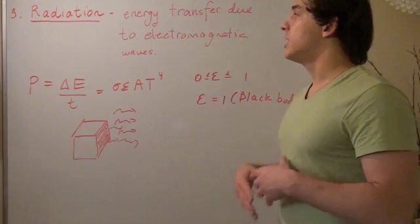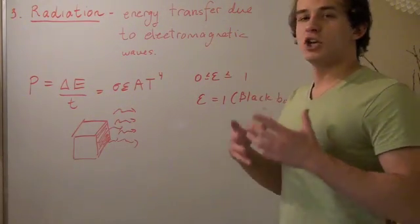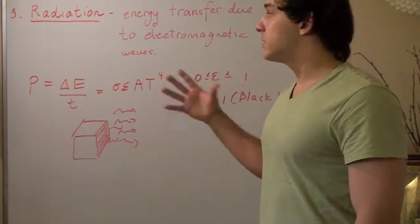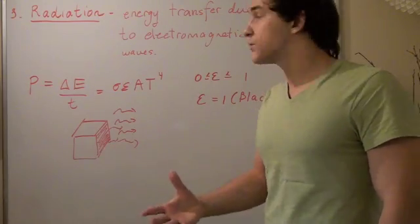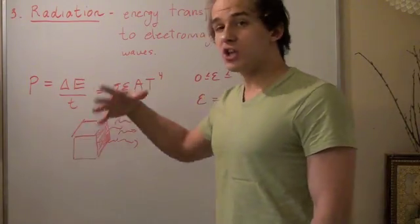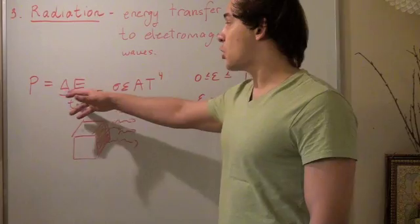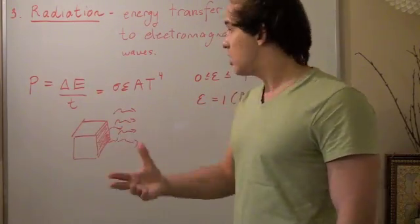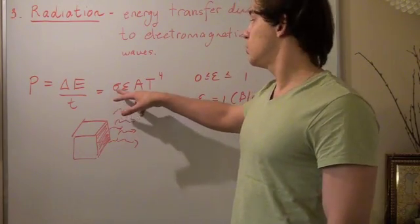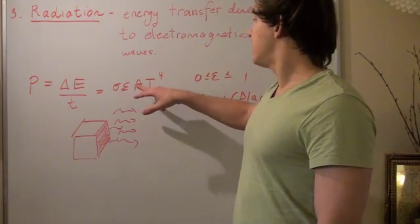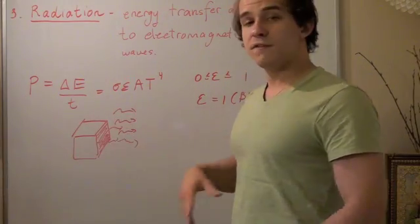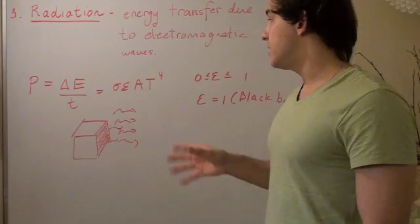When we spoke earlier about conduction, we also mentioned rate of energy transfer. Here, we can also talk about a similar concept, rate of energy transfer. But the formula here is different. The formula here is power, which is actually change in energy over time, which is the rate flow, is equal to sigma, which is a constant and will be given to you, emissivity, value A and T to the fourth. T is the temperature of the object. A is the area of the face that's radiating the heat.